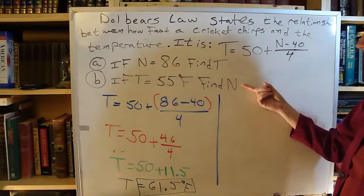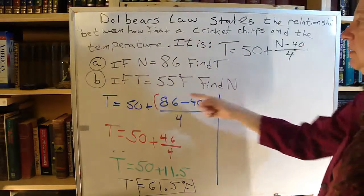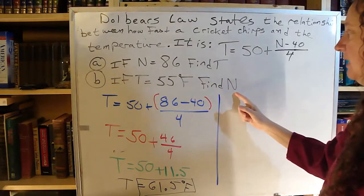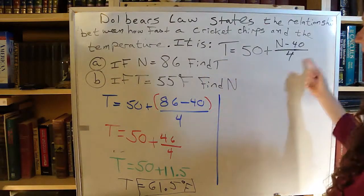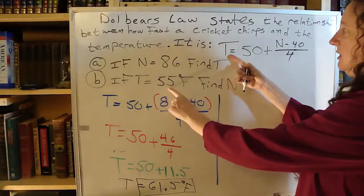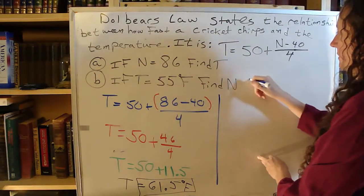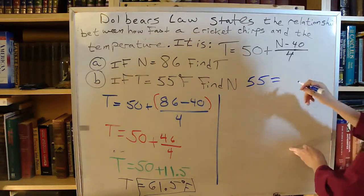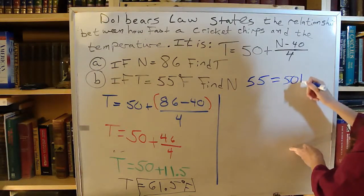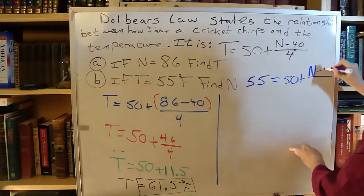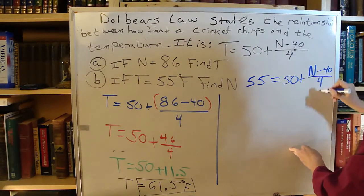Now we do Part B. Part B is telling us that T is 55, and we need to find N. So I'm going back up to my equation up here. Instead of writing T, I write 55 equals 50 plus, then I have that giant fraction, N minus 40, all over 4.